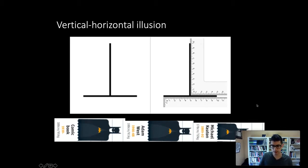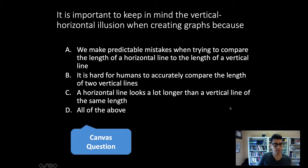It's important to keep that in mind. For one of the participation questions on Canvas, why is it important to keep in mind the vertical and horizontal illusion? Is it because we make predictable mistakes when trying to compare the length of a horizontal line to the length of a vertical line? Is it because it's hard for humans to accurately compare the length of two vertical lines? Is it because a horizontal line looks a lot longer than a vertical line of the same length? Or is it all of these things?